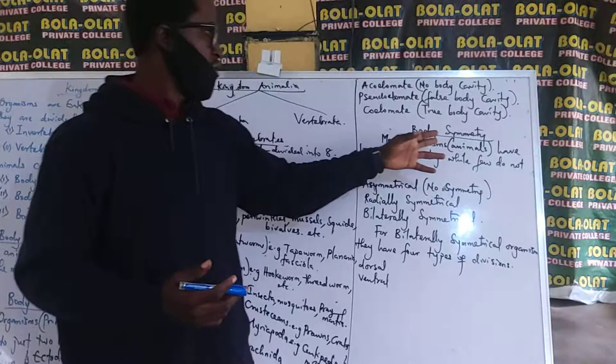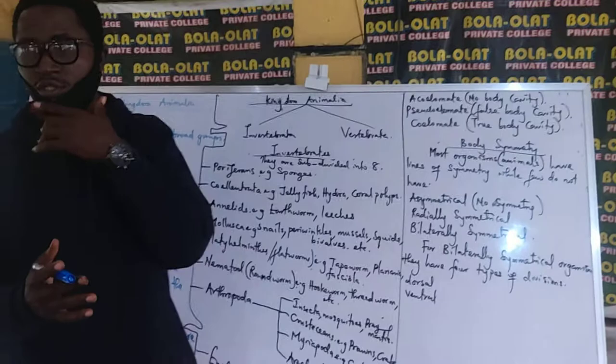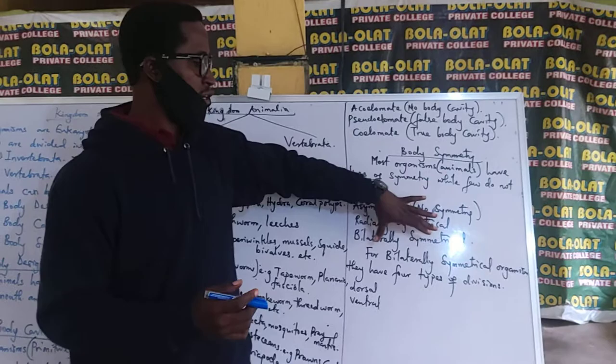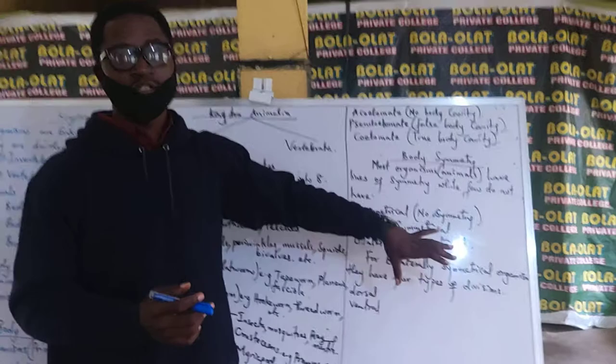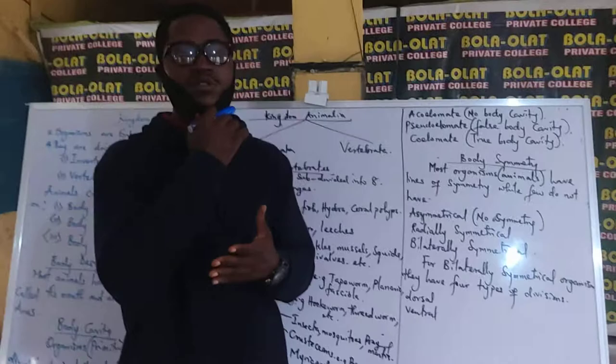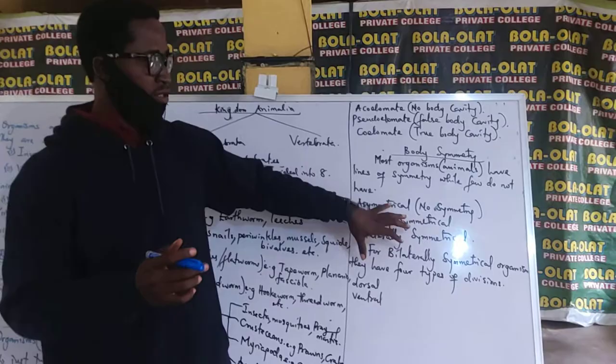Body symmetry is just how the line of symmetry is found in living animals. We have the asymmetrical ones — no symmetry, no line of symmetry. Then you have the radially symmetrical ones, and then you have the bilaterally symmetrical ones. For the meaning of bilateral symmetry — when you hear dorsal, when you hear ventral — we will be explaining that in our practical class.